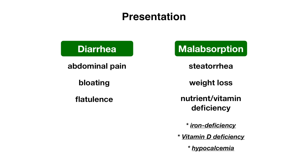The first deficiency to know is iron deficiency, which happens because iron is absorbed primarily in the duodenum as well as the proximal jejunum. Vitamin D deficiency also occurs because vitamin D is a fat-soluble vitamin and will be affected in this case. Hypocalcemia can also occur because of impaired absorption of vitamin D and because of the binding of intraluminal calcium to unabsorbed fatty acids.